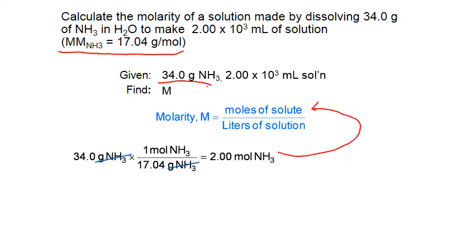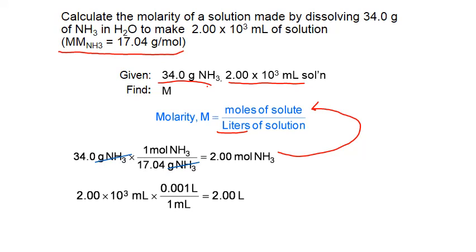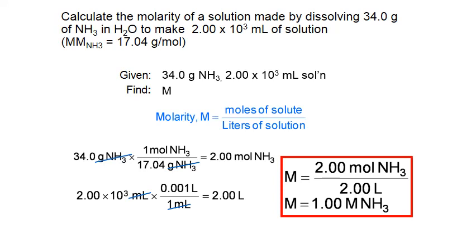That 2.00 moles becomes the numerator in our formula. We also need to convert our volume from milliliters to liters. Using the conversion factor — 1 milliliter equals 0.001 liters — we get 2.00 liters of solution as the denominator. Plugging both values in, 2.00 divided by 2.00 gives 1.00 M, where capital M stands for moles of solute per liter of solution.